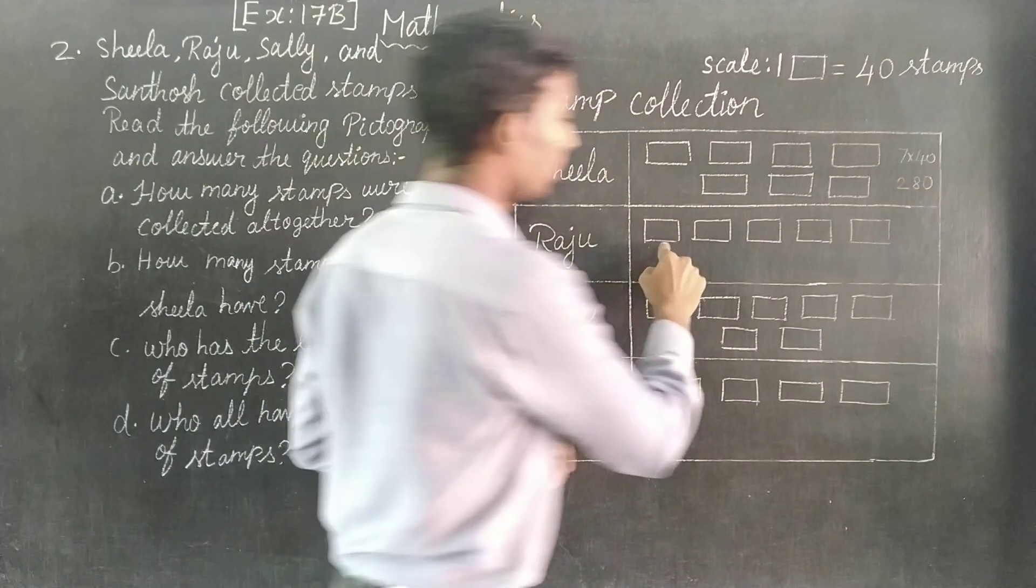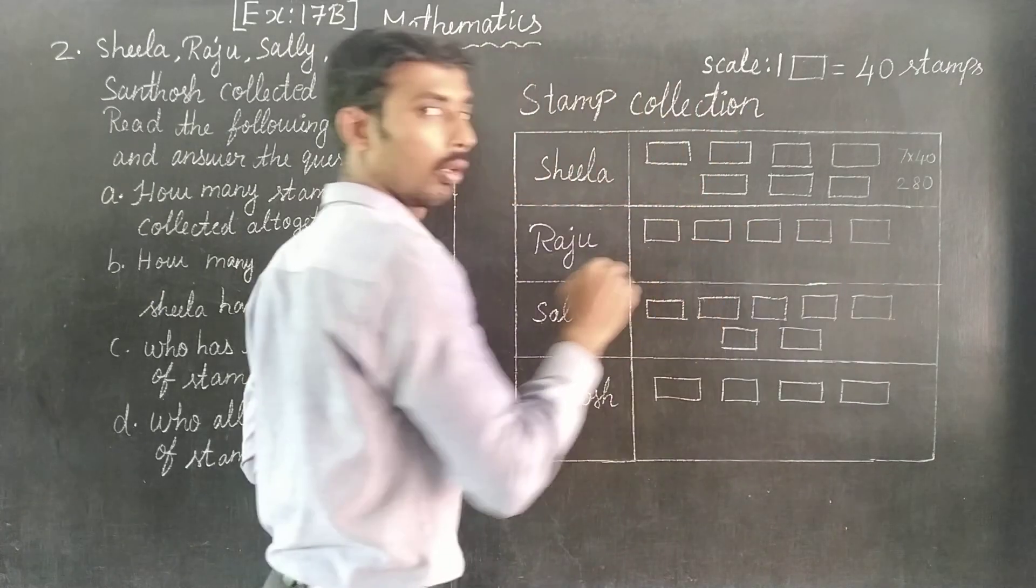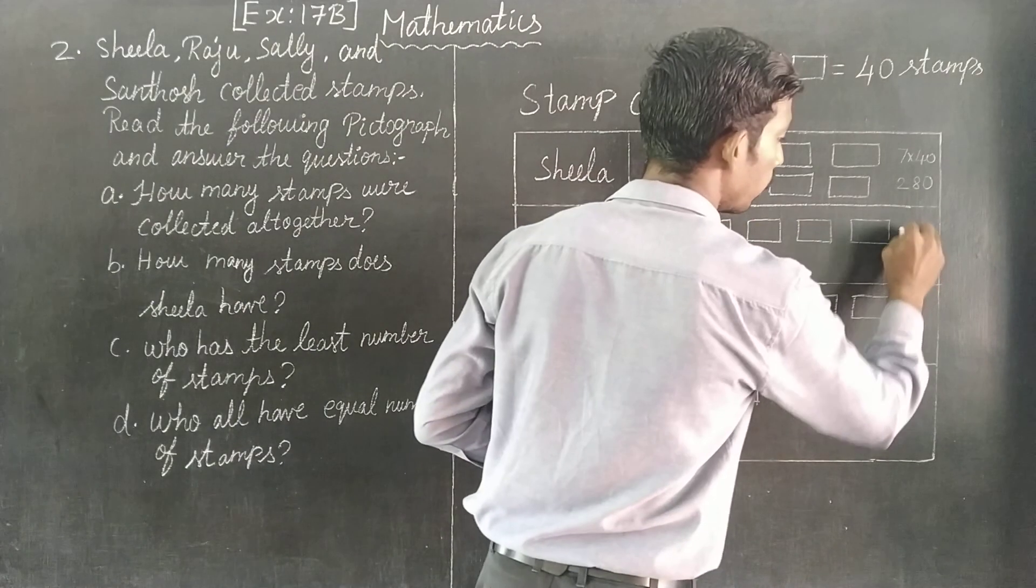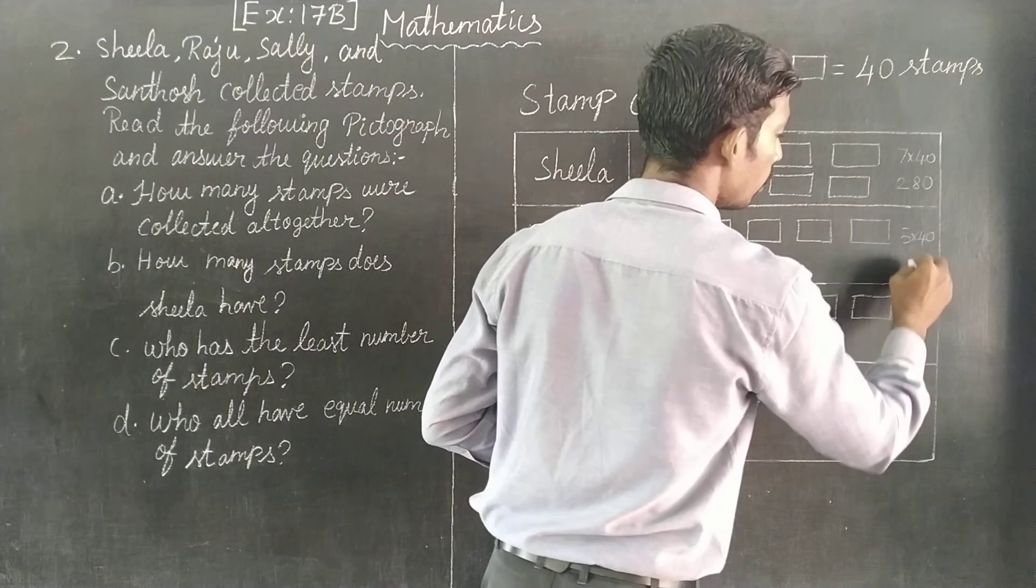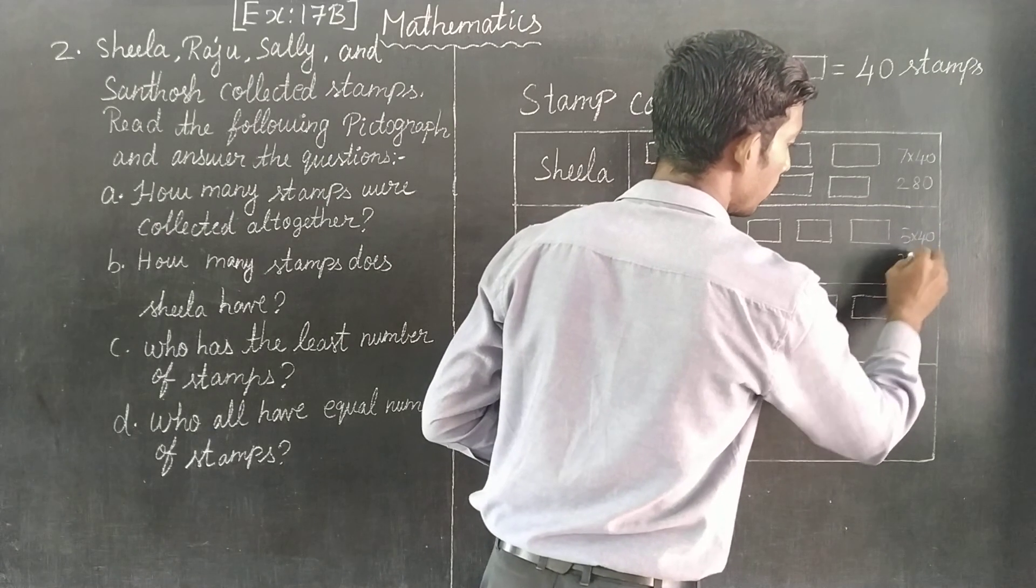Next, Raju: five, five, five boxes. 40 each, five times 40 equals 200.